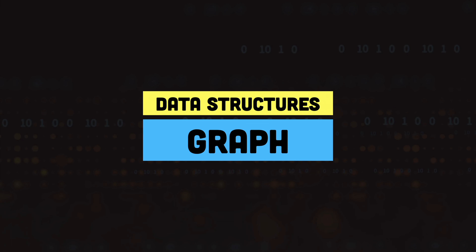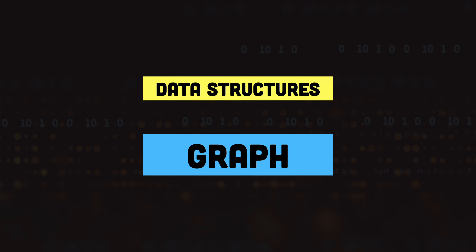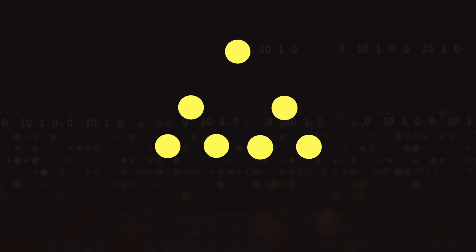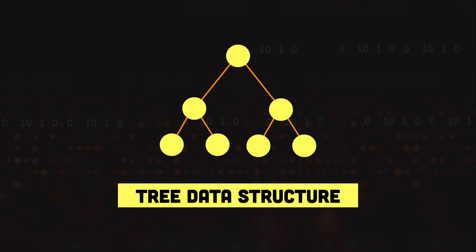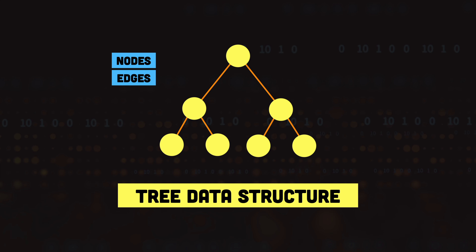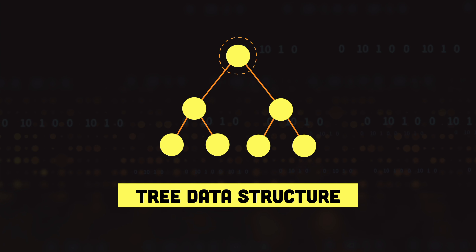Hey everyone, this is Kamran and our topic for today is graph data structure. In the past we have talked about the tree data structure where we have nodes, and these nodes are connected with the help of edges. We also have a root node which is the starting point of the tree, and this is the node where we always start reading the data in the tree.